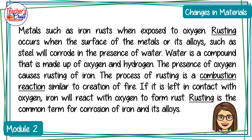Metals such as iron rust when exposed to oxygen. Rusting occurs when the surface of metals or their alloys such as steel corrode in the presence of water — a compound made up of oxygen and hydrogen. The presence of oxygen causes rusting of iron. The process of rusting is a combustion reaction similar to the creation of fire. If left in contact with oxygen, iron will react with oxygen to form rust.